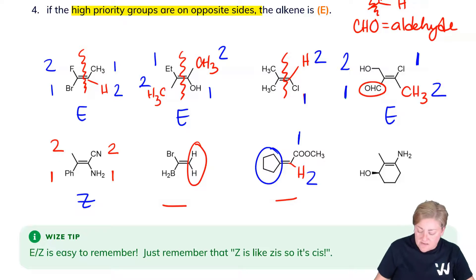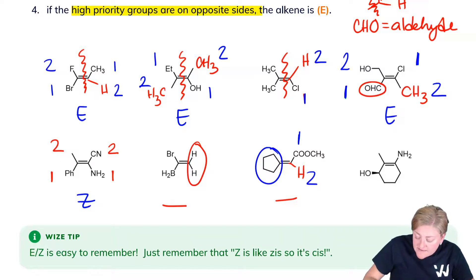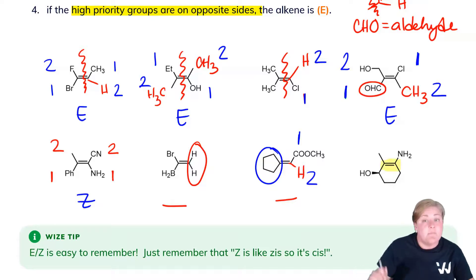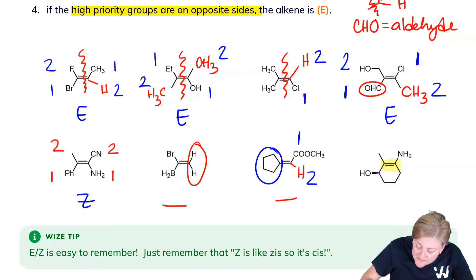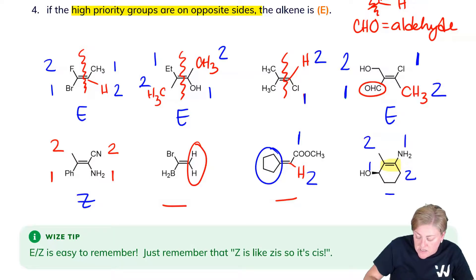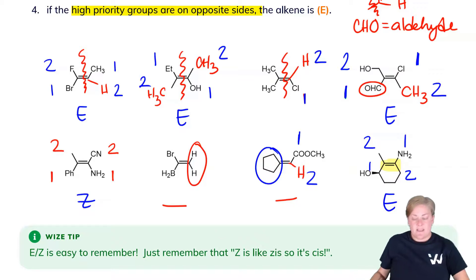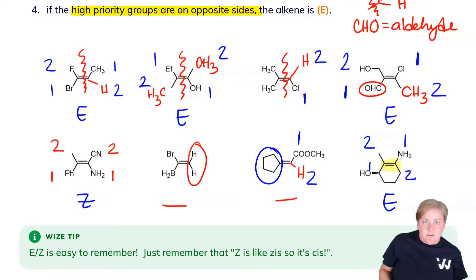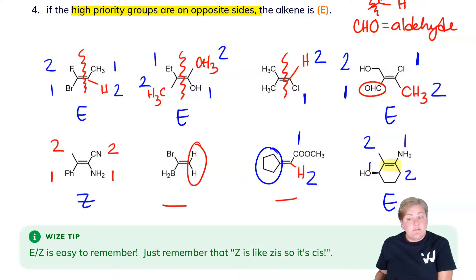Last but certainly not least, we'll take a look at the next structure. It's contained within a ring, so it's a little bit tricky to spot, but no problem. This is priority number one up here, and number two. This is number one, and this is number two. For that reason, this structure is E. These are good practice, and as I said, head to the Cahn-Ingold-Prelog Rules section, which you're going to see moving forward, and you can use it here to assign the priorities. This is content you're going to get to recycle through all of this jargon.